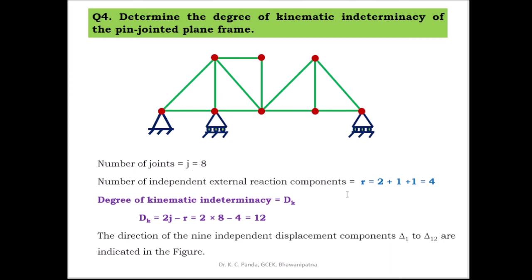Then dk = 2 × 8 − 4 = 16 − 4 = 12. The degree of kinematic indeterminacy of this problem is equal to 12, meaning 12 independent displacements take place.